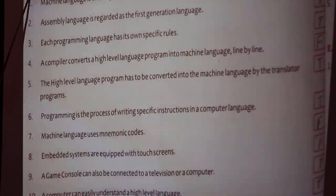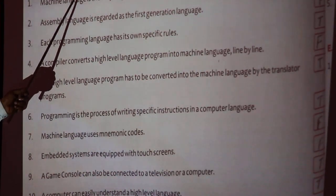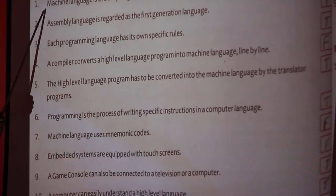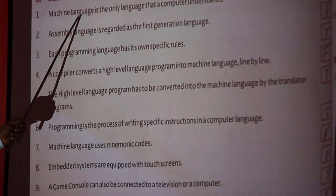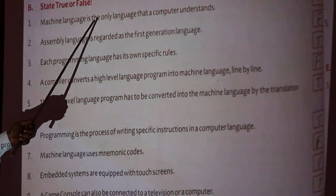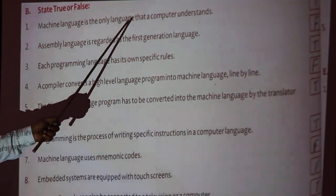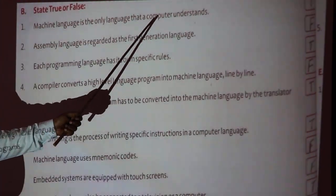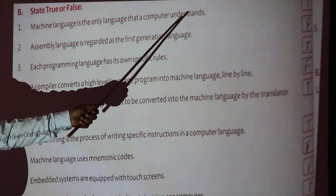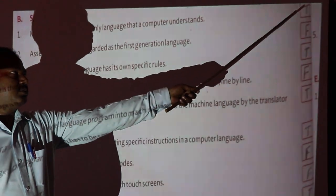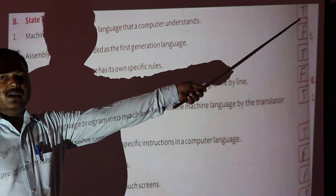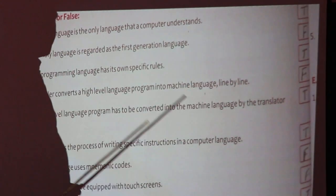Exercise B: State true or false. One — machine language is the only language that a computer understands. That is true.